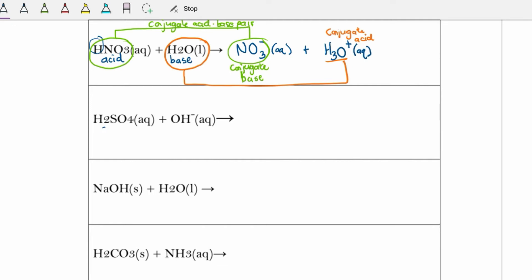The next example is sulfuric acid with a hydroxide ion, where the hydroxide ion is acting as the base. The first thing to note about sulfuric acid is that it is a diprotic acid, meaning it has two hydrogens that it can give away. We'll look at both reactions — first where it gives away only the first hydrogen, and then where it gives away the second hydrogen.